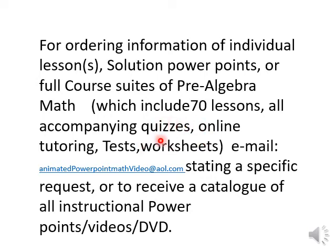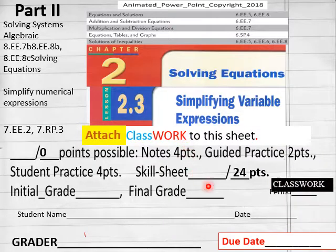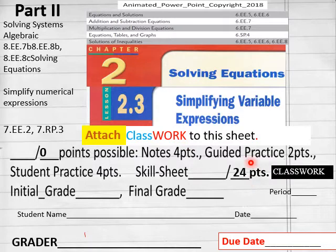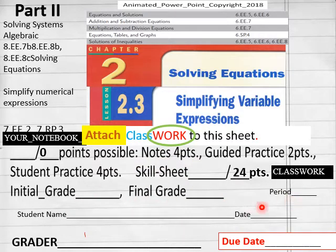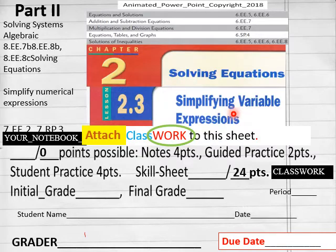Hello everybody, getting ready to do lesson 2.3 part 2 today of your classwork. The lesson has 24 points on your classwork sheet. Have that out in front of you now, and students put your name, date, and period on your paper, your phone, or your tablet. Let's go into part 2 of simplifying variable expressions.